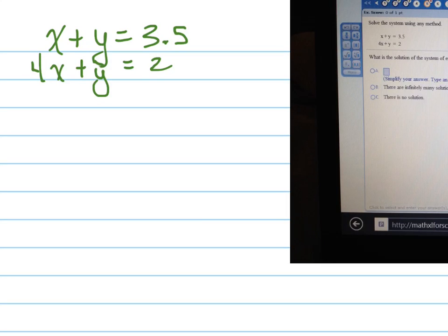They want us to solve this system of equations by any method. The easiest method to solve something like this is with the elimination method, or linear combinations as it's sometimes called. What we're going to do is multiply this by negative 1.